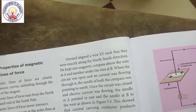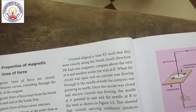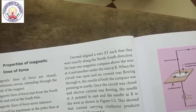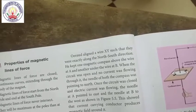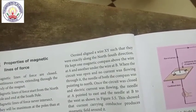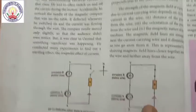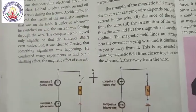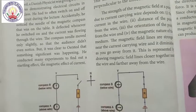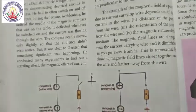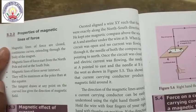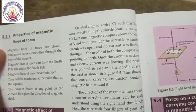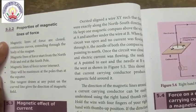Once the circuit was closed and the electric current was flowing, the needle at A pointed to east and the needle at B pointed to the west. Then, when the direction of current was reversed, A pointed to west and B pointed to east, as shown in figure 5.5. This showed that the current-carrying conductor produced a magnetic field around it.